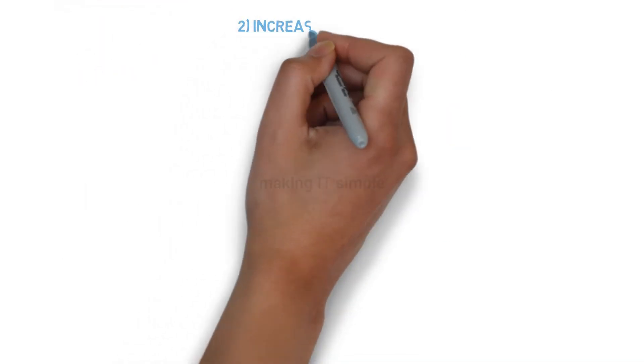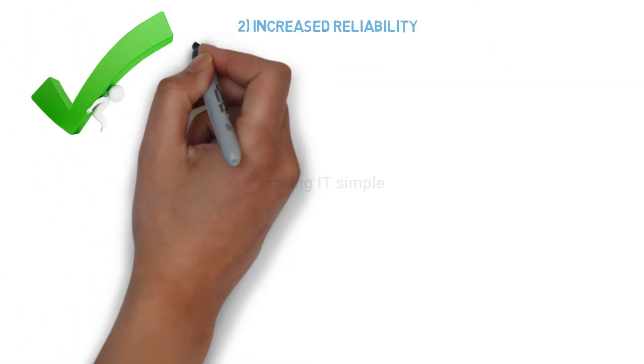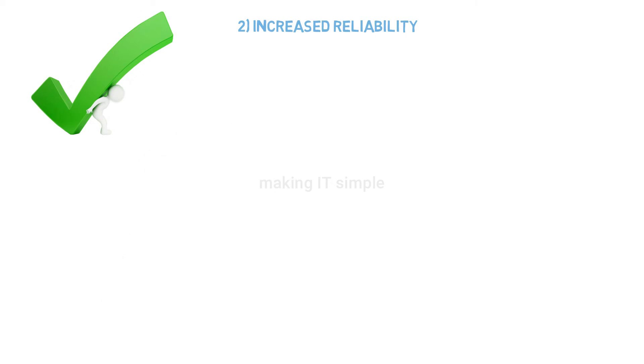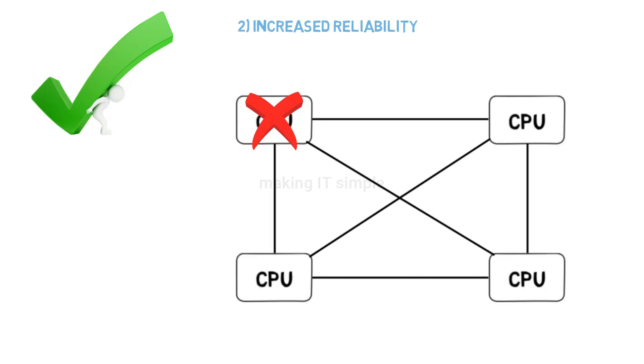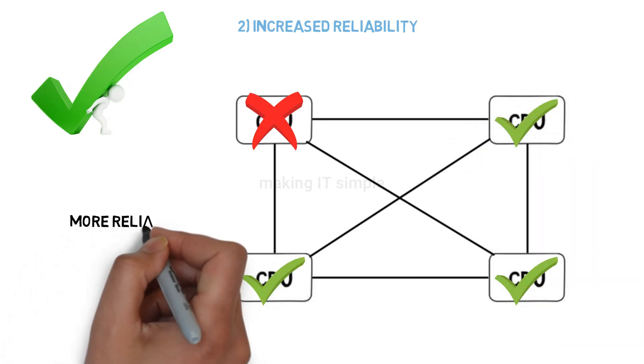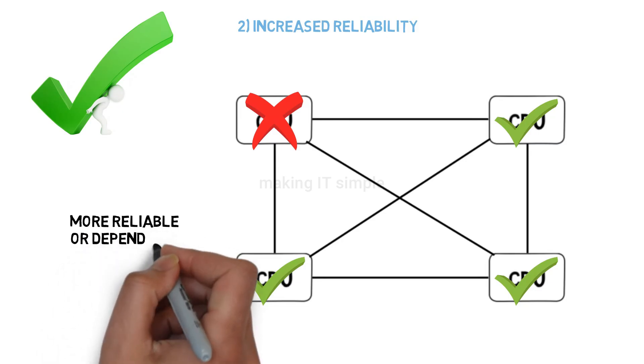Second advantage is increased reliability. This means that we can be more reliable or dependable on the system. How? If we have multiple processors and if any one of the processor fails or gets damaged, the work or processing will not stop, as other processors are still running. So the reliability is increased in multi-processing.